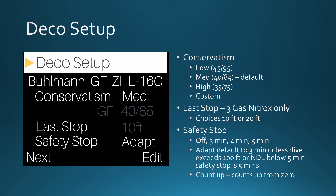Finally, you can change the safety stop. The default setting is ADAPT. Normally, ADAPT will have a 3-minute safety stop, unless you exceed 100 feet or your NDL dips below 5 minutes — the computer will then display a 5-minute safety stop. You can also turn it off, or set the safety stop at 3, 4, or 5 minutes.